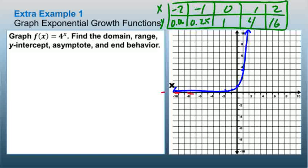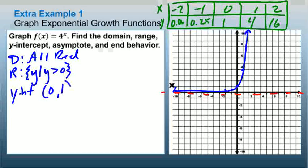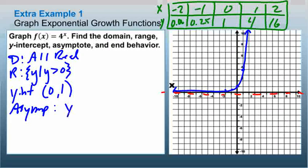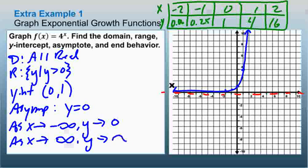The asymptote is the x-axis, where y = 0. The domain is all real numbers. The range is y such that y is greater than 0. The y-intercept is (0, 1). The asymptote is y = 0. As x approaches negative infinity, y approaches 0, and as x approaches positive infinity, y approaches positive infinity.